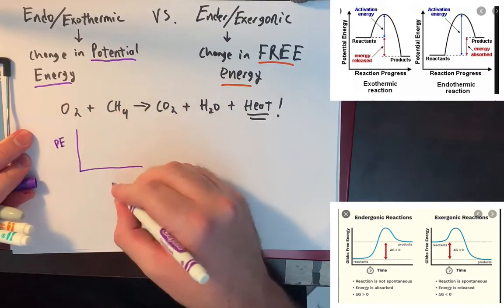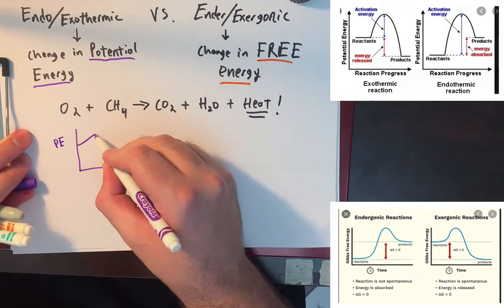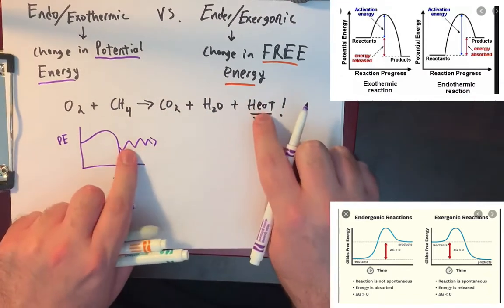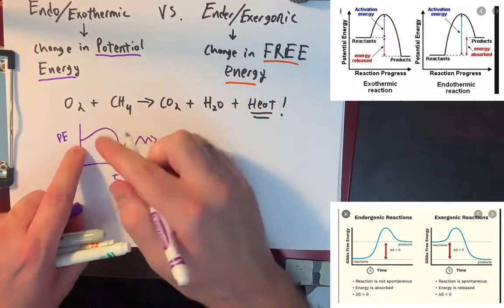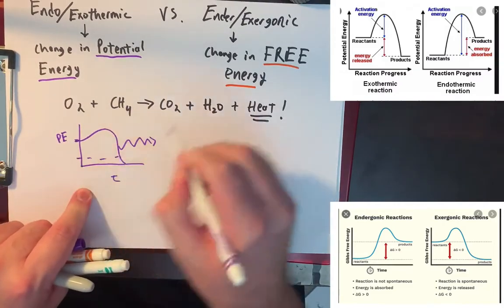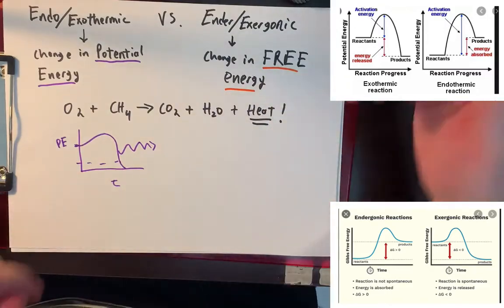Let's go ahead and just plot this: potential energy versus time, the reaction process here. Starts off here, there's a bit of a change there. And in that process we're releasing energy from heat. So our potential energy went from up here being high with these guys to being something down here. We've lost potential energy. We've given that off in the form of heat.